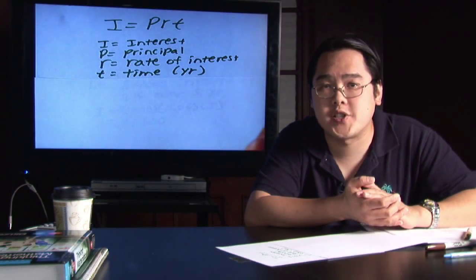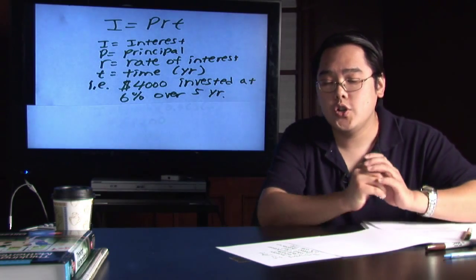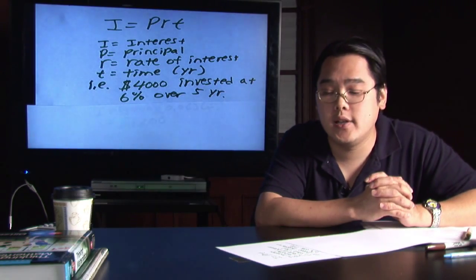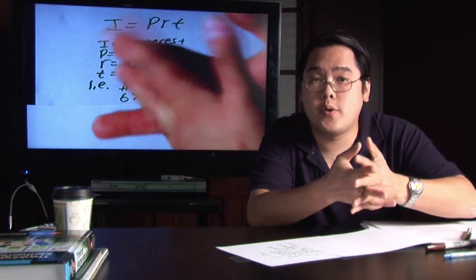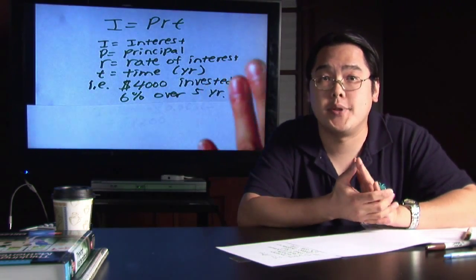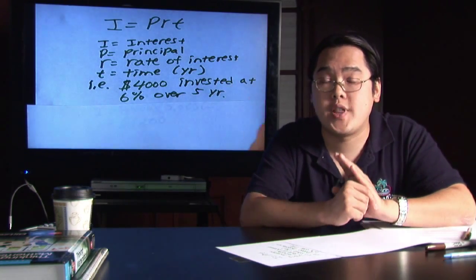Now, we're going to go over a very simple example for you. Suppose you would like to invest $4,000 at 6% interest over the five year span. It's a straightforward plugging in process, but the only thing you want to keep in mind is that 6%, you want to convert that to a decimal.